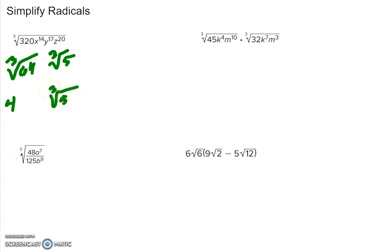I can't break that down further. Now for the cube root of x to the 14th — a quick way of solving this is taking the exponent and dividing it by the index, because I need groups of 3 for a cube root. How many groups of 3 can I get out of 14? I can get 4 groups of 3, so I'm going to have x to the 4th on the outside. 3 times 4 is 12, and 14 minus 12 is 2, so I have x squared left on the inside.